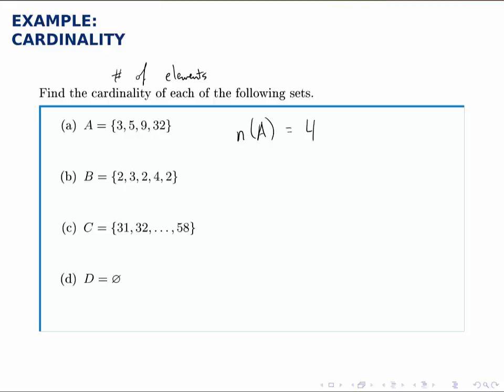In part B it looks like there are five elements, but really there are only three distinct elements. Remember, in a set there's no reason to list one element more than once. So really this is just the set 2, 3, and 4. So there are only three distinct elements, so the cardinality is 3.